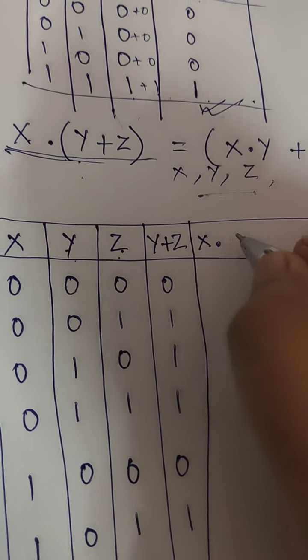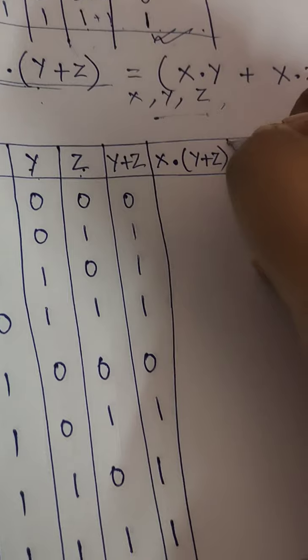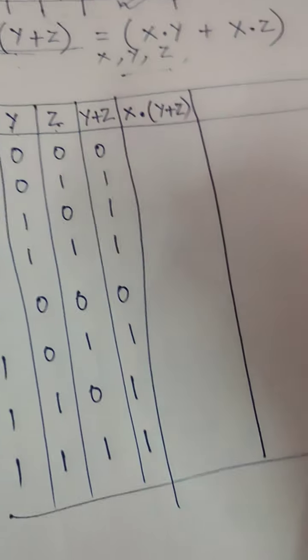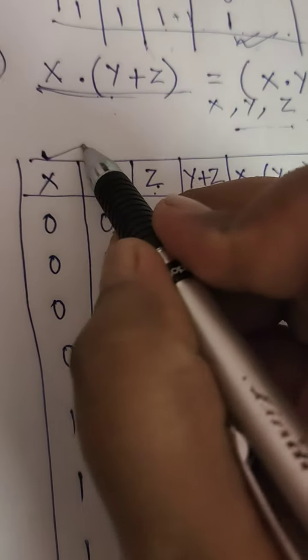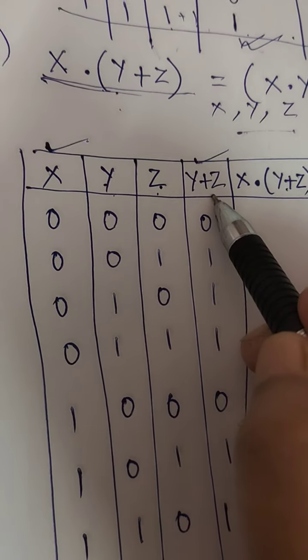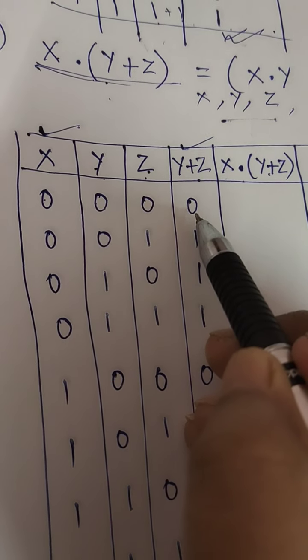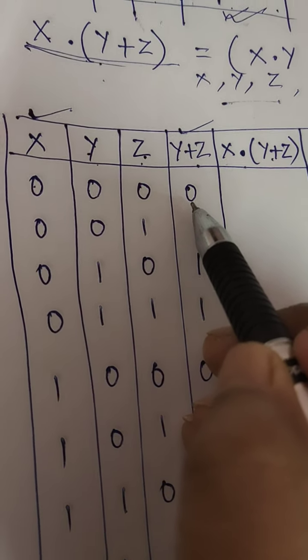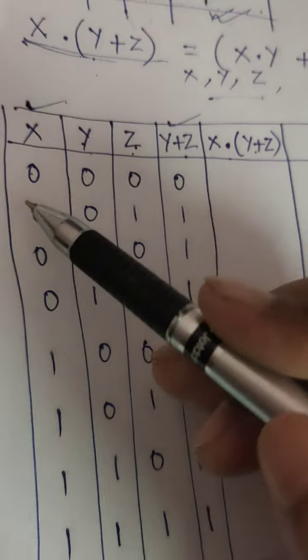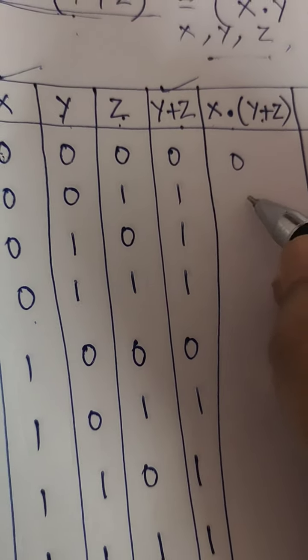Now we'll write the total. So what is the total? x dot y plus z. Now look, this column and this column, we've already found the answer here. So x dot means in both columns we need to use the AND operator. In the AND operator, if even one is zero, my answer will be zero. So the first four outputs will be zero.